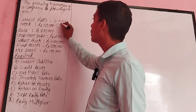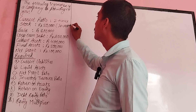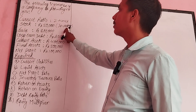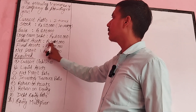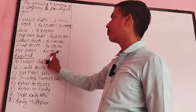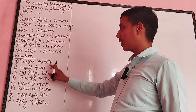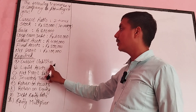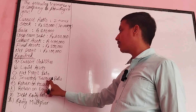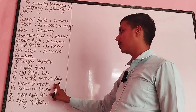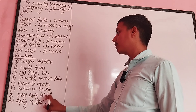The given data includes: stock or inventory, sales, long-term debt, current assets, fixed assets, net profit, current liability, liquid assets, net profit ratio, return on assets, return on equity, and debt-equity ratio.